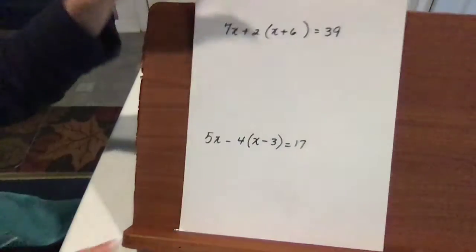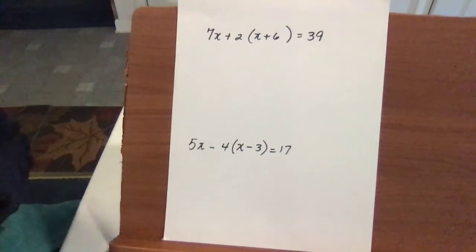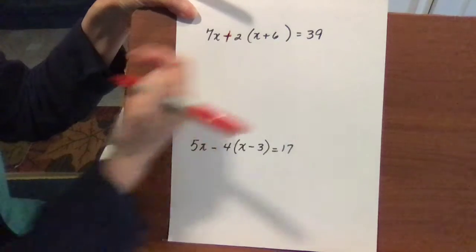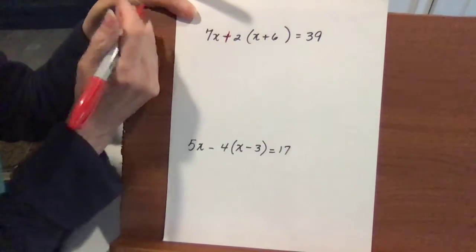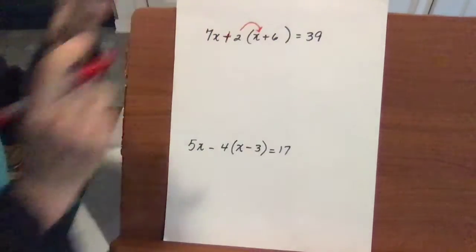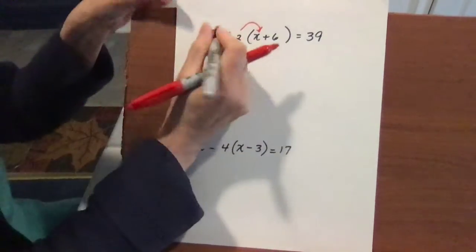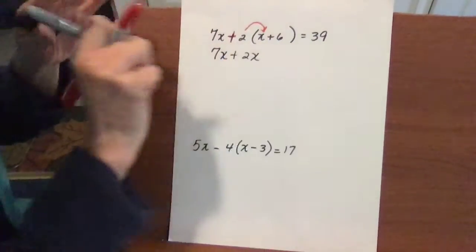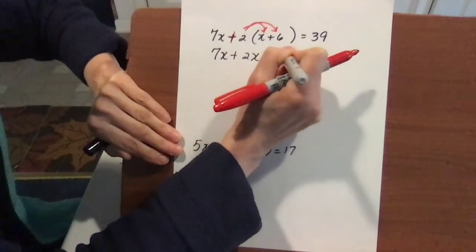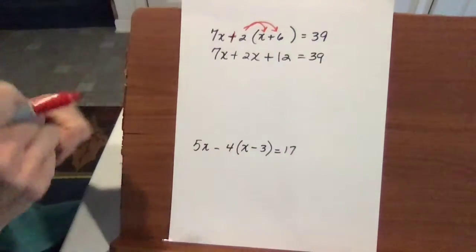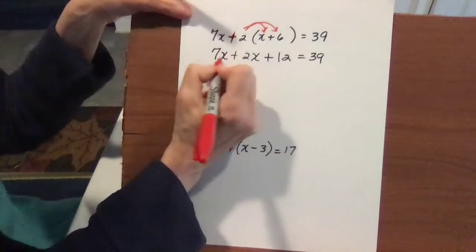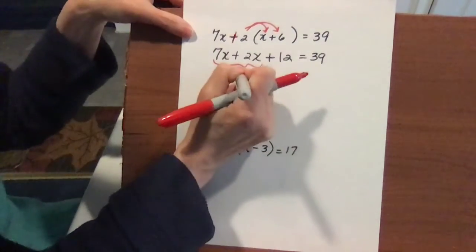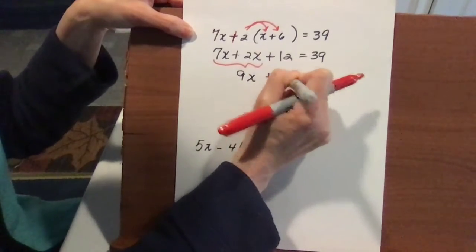Next we have 7x plus 2 times the quantity x plus 6, equals 39. There's a big plus sign between 7x and the quantity, so 7x stays separate and the 2 is the multiplier. Keep the 7x; 2 times x is positive 2x; 2 times positive 6 is positive 12. Gather like terms: 7x and 2x gives 9x plus 12 equals 39.